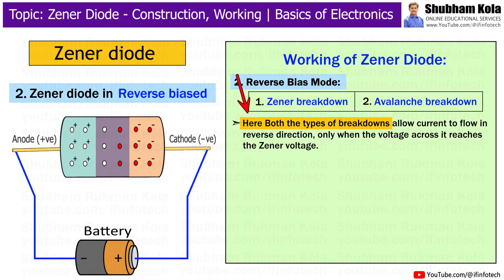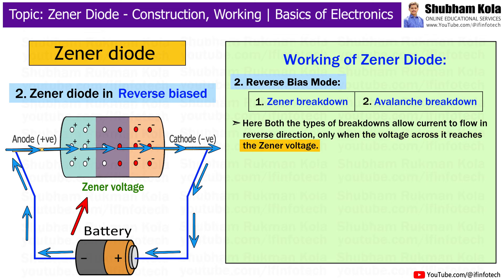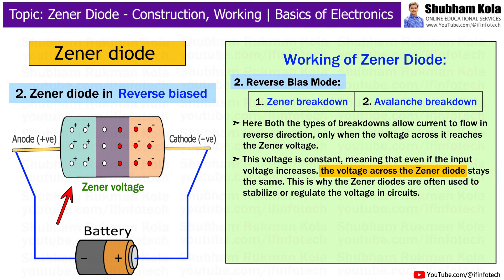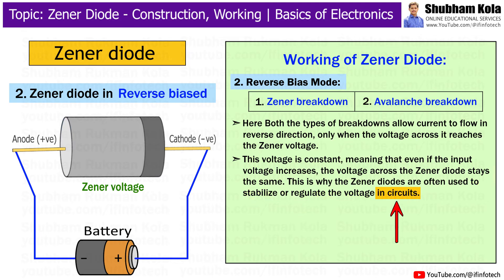Both types of breakdowns allow current to flow in the reverse direction only when the voltage across the diode reaches the Zener voltage. This voltage is constant, meaning that even if the input voltage increases, the voltage across the Zener diode stays the same. This is why Zener diodes are often used to stabilize or regulate voltage in circuits.